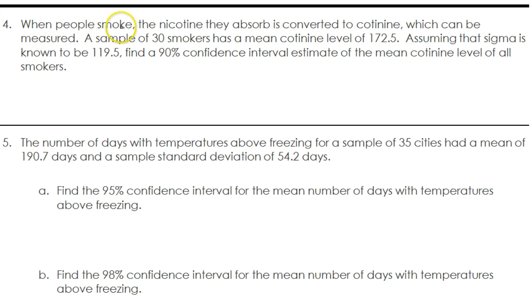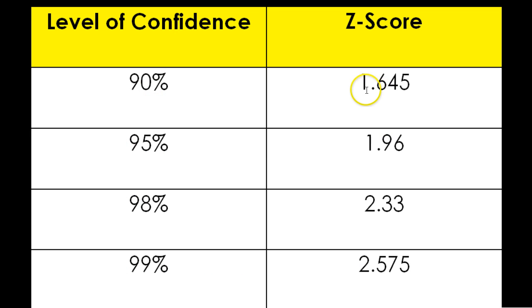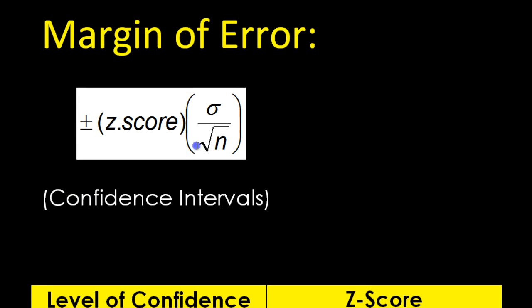Number 4. When people smoke, the nicotine they absorb is converted to cotinine, which can be measured. A sample of 30 smokers has a mean cotinine level of 172.5. Assuming that sigma is known to be 119.5, find a 90% confidence interval. It says 90% confidence interval, so that means we'll be using a z-score of 1.645.